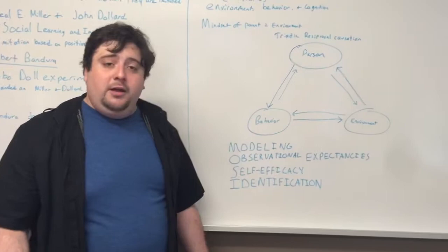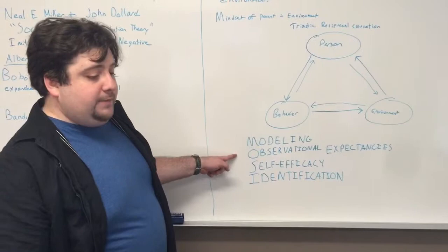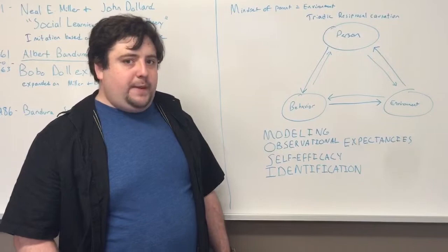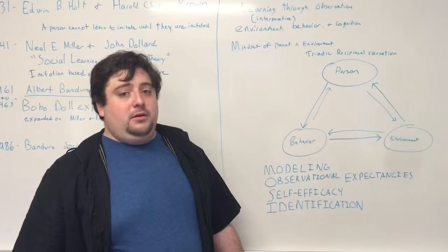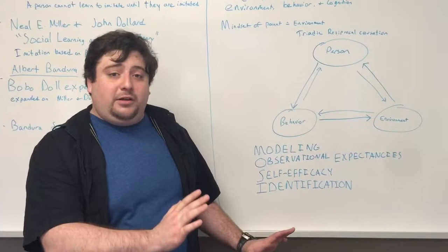The second part is observational expectancies, which form in the person's head. They will expect similar outcomes—not necessarily exact. If someone does something and a positive outcome ensues, you will be likely to expect something similar and therefore imitate the behavior.